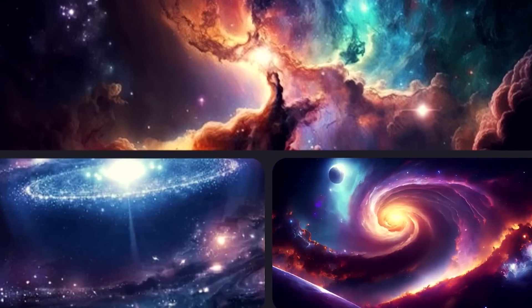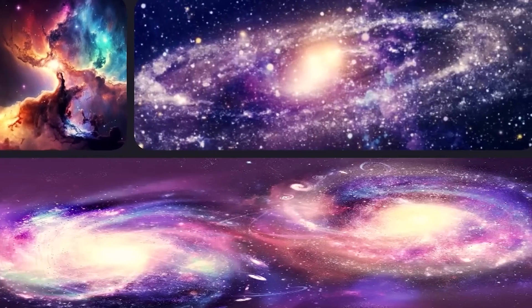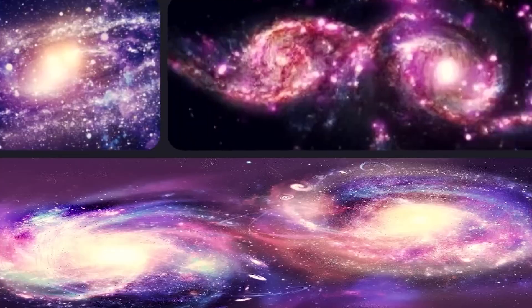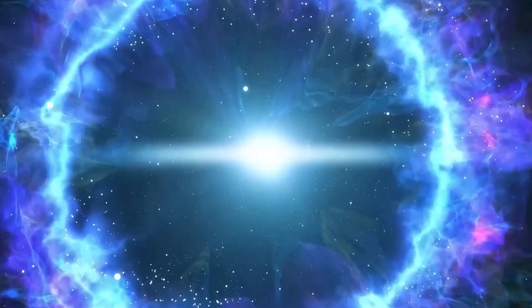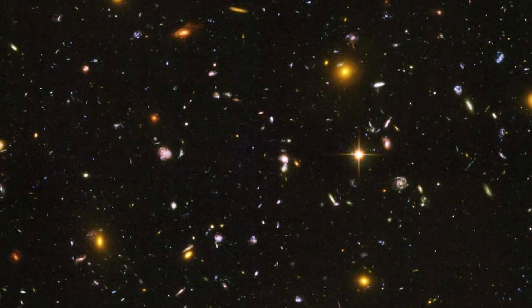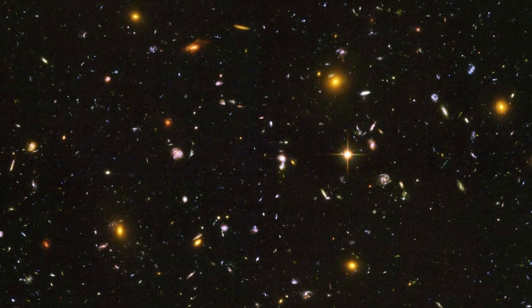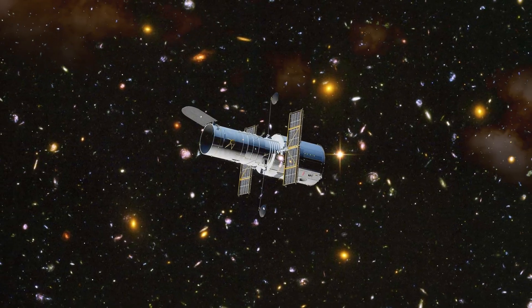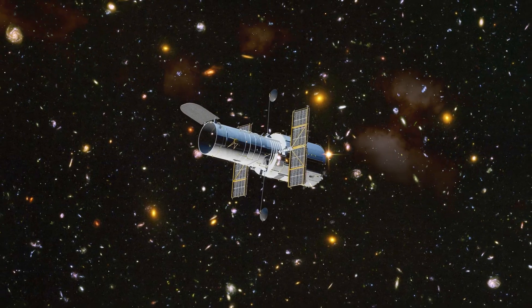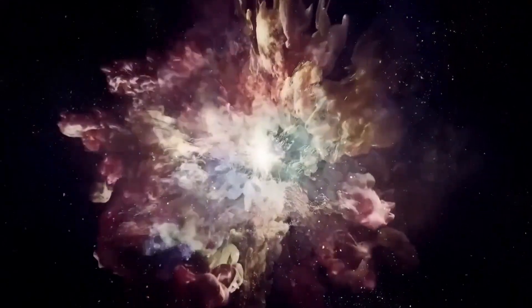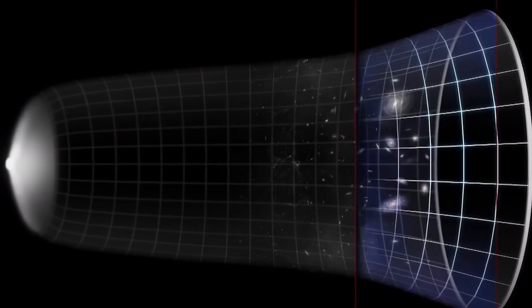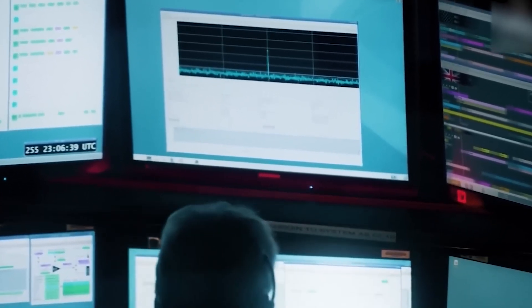The striking images captured by the James Webb Space Telescope have challenged our understanding of the origins of the universe. Specifically, these images directly contradict the Big Bang hypothesis. The fact that the observed galaxies are two to three times smaller than similar galaxies imaged by the Hubble Space Telescope completely defies the expected behavior in an expanding universe. According to the hypothesis, as the universe expands, objects should appear larger as distance increases. However, these James Webb observations show galaxies that defied expectations.